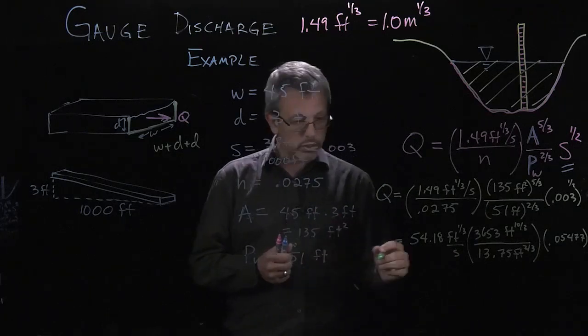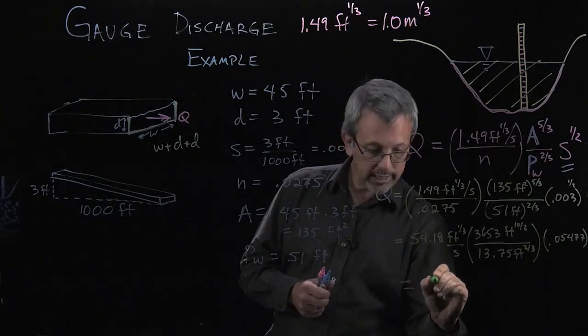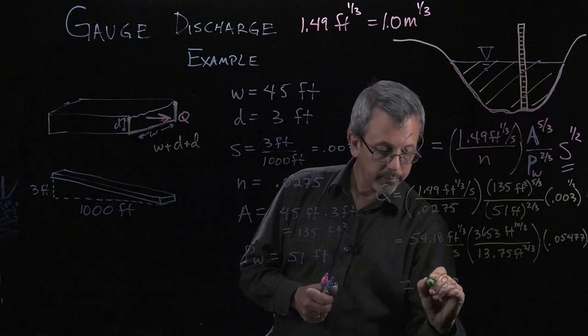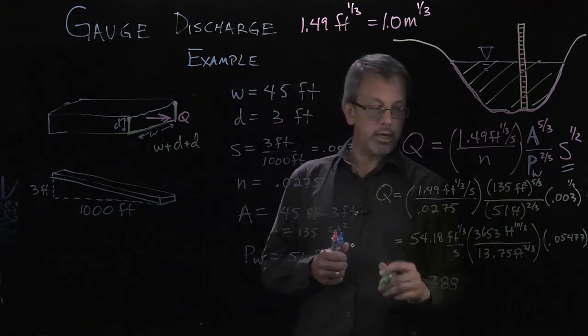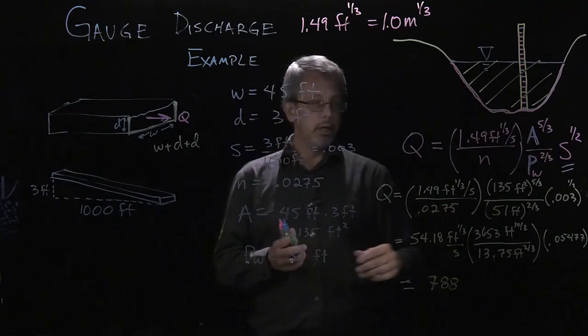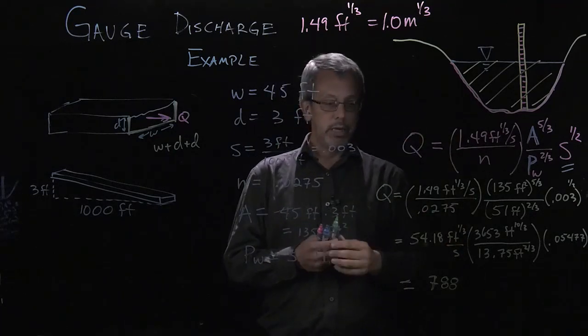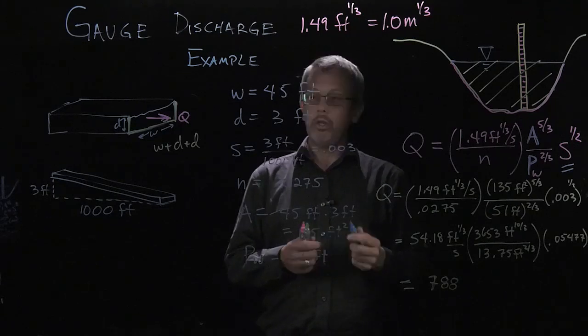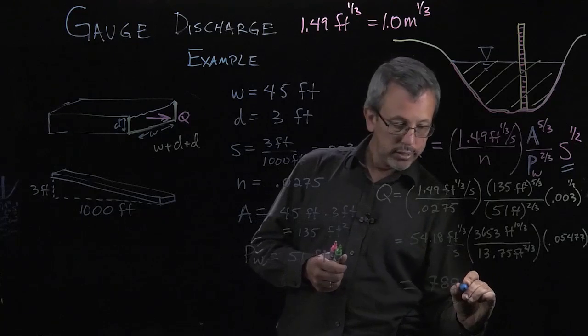Finally, when I put all those into place, I end up with a value of 788. Keeping only three significant digits, because I believe that's the number that we have for our Manning's n and also for almost all our values. 788 what? What are the units? Well, if I look carefully here, I have per second. There's the per second.